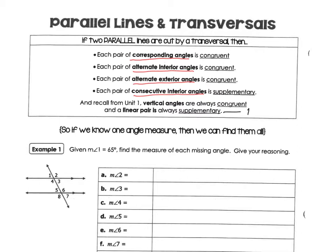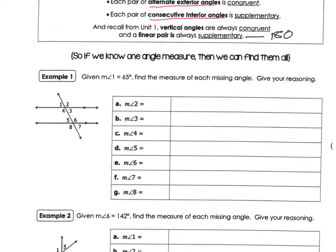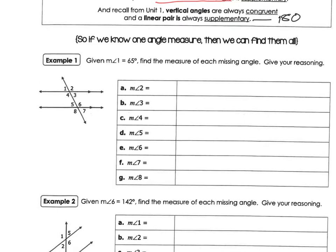Now we're going to come down here and work through an example. It's going to give us one angle, and based on our rules we'll figure out what the other angles equal. So it says the measure of angle one is 65 degrees.